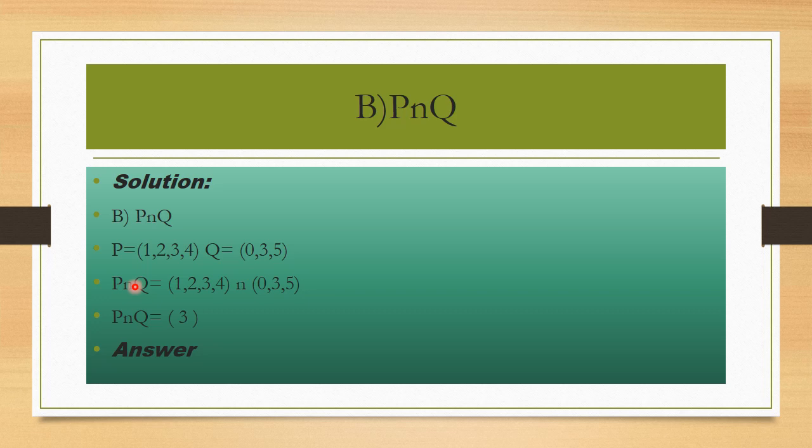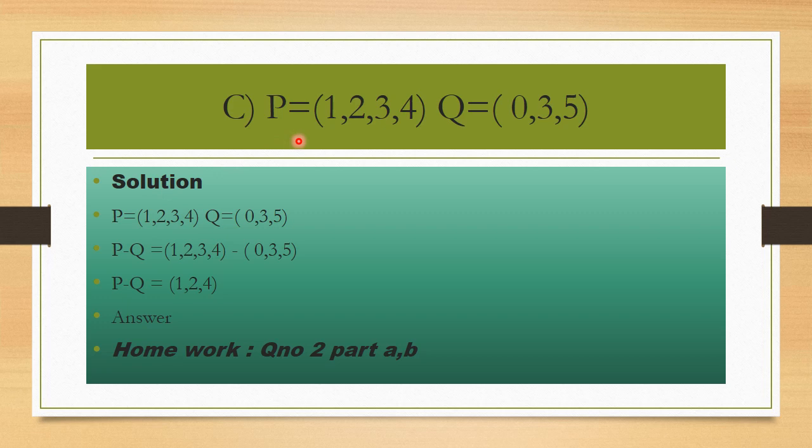Next, P minus Q. P = {1,2,3,4}, Q = {0,3,5}. For P minus Q, we remove Q elements from P. 1 is in P, not in Q, so we write 1. 2 is in P, not in Q, so we write 2. 3 is in both P and Q, so we do not write 3. 4 is in P, not in Q, so we write 4. Therefore, P minus Q = {1,2,4}.